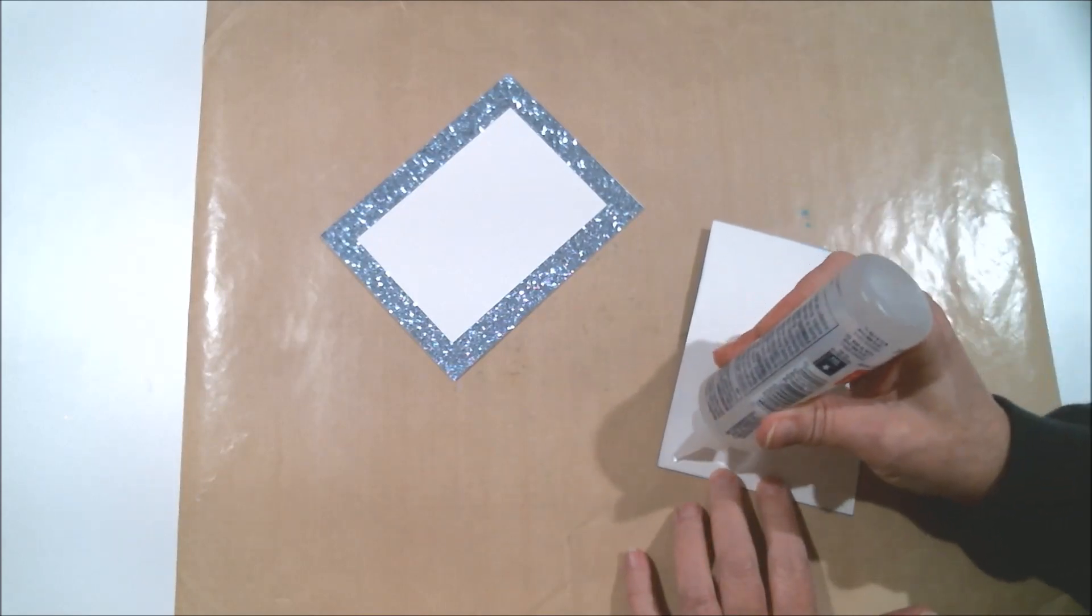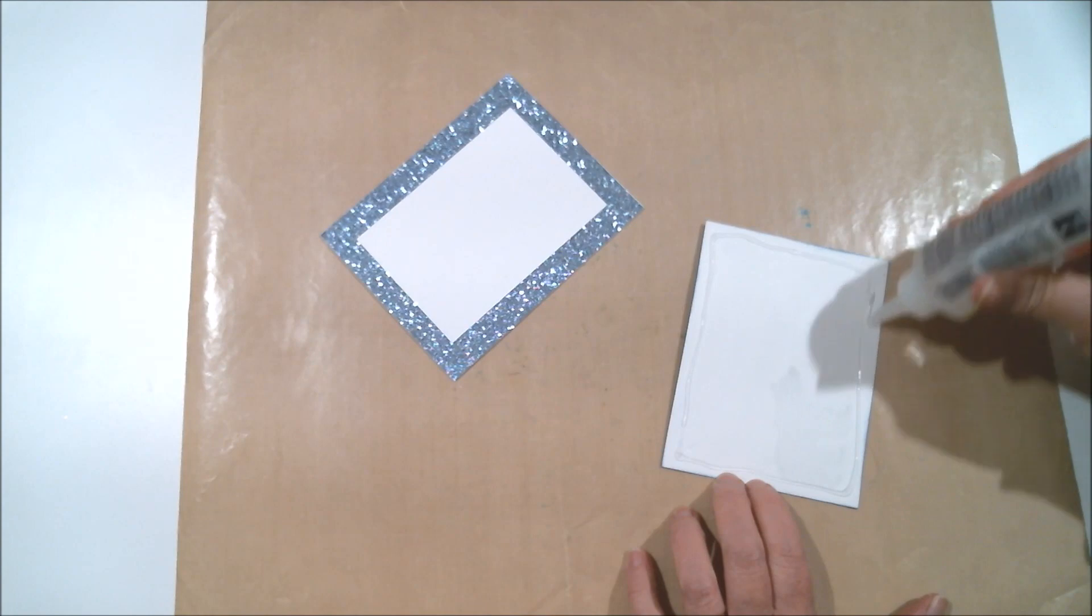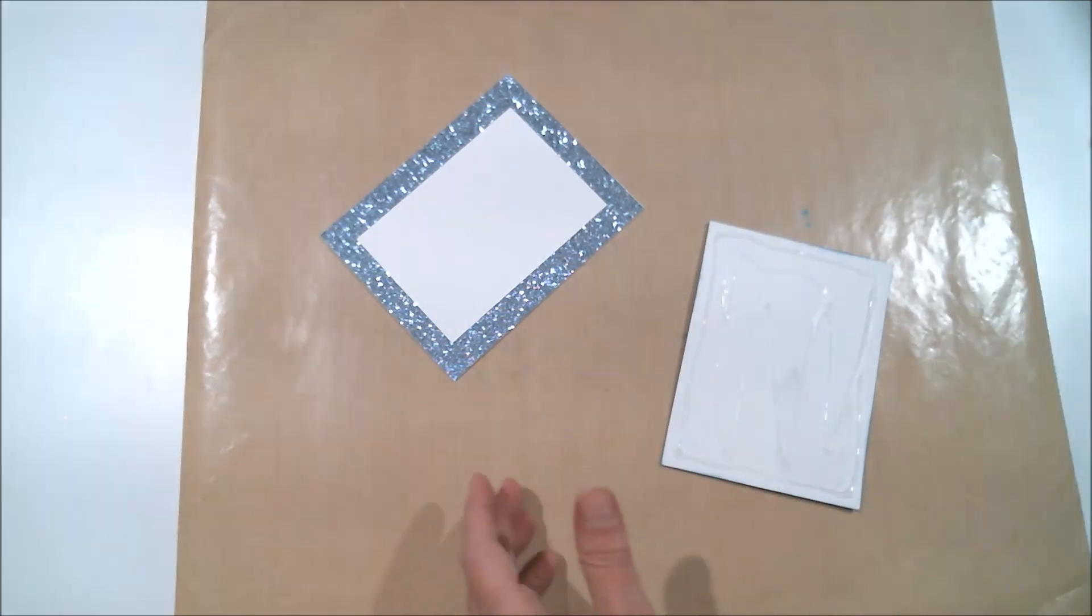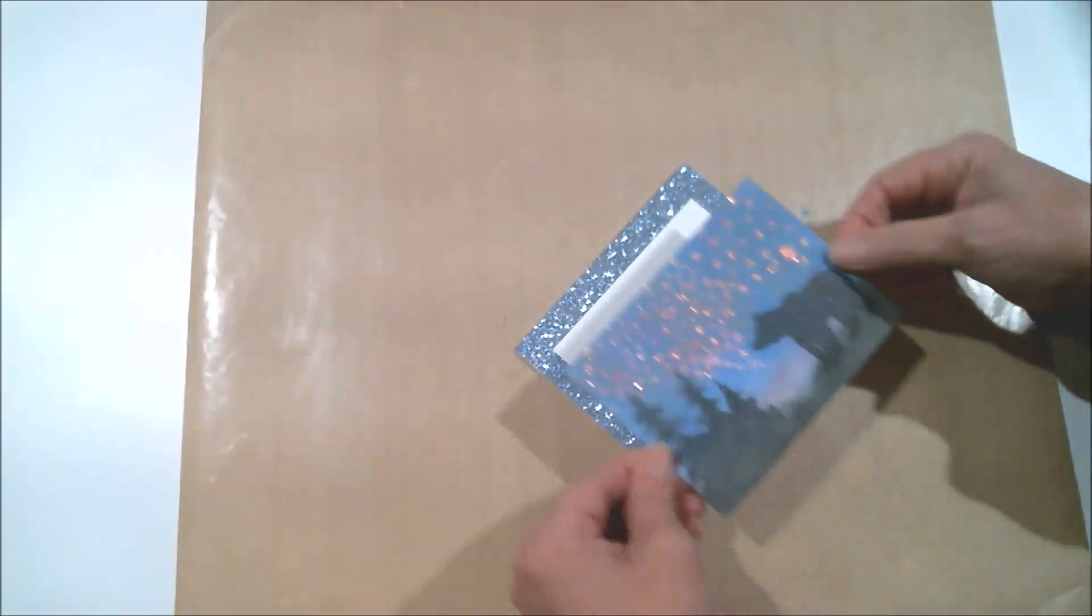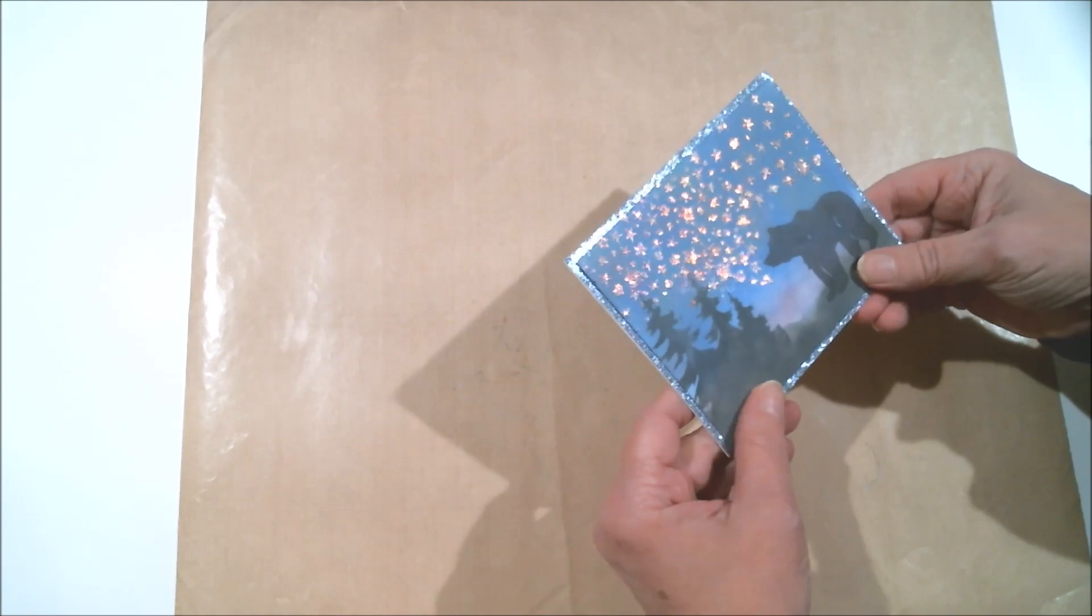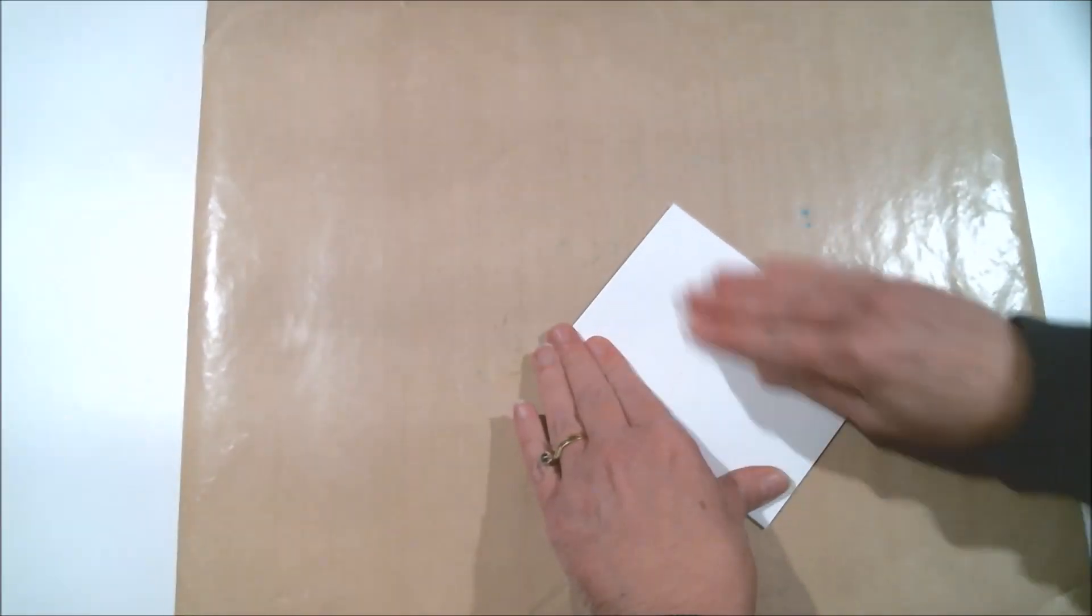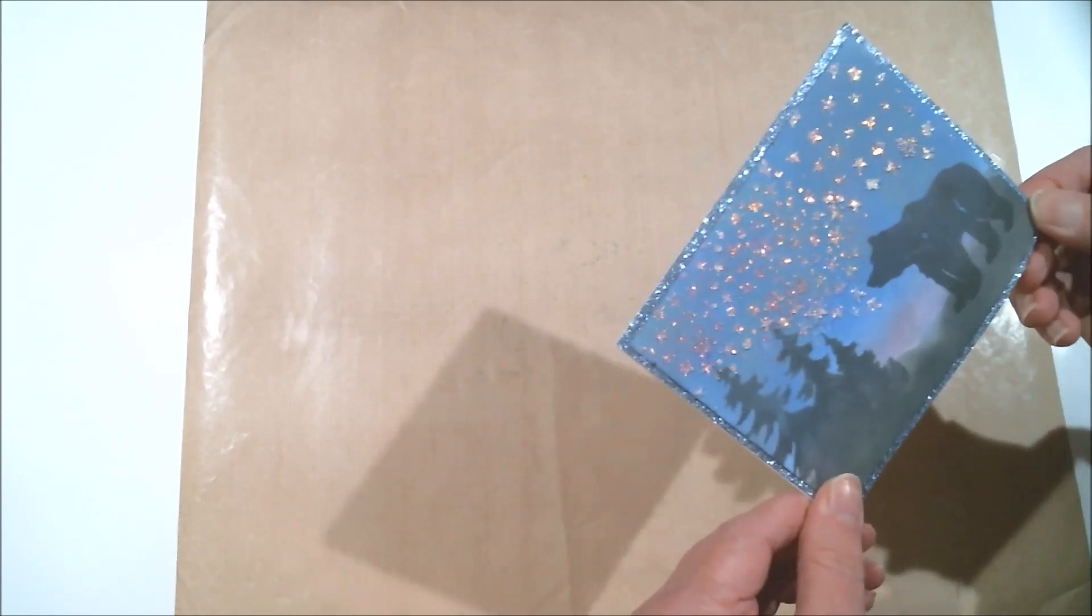And now I'm using my Beacon Three-In-One to glue that on the front of the card and it is going to be so beautiful. Just check this out because that glitter paper is kind of a blue, I mean it's a beautiful color blue that I think just worked so perfectly with that card. What do you think?